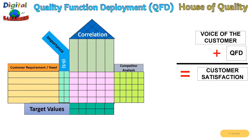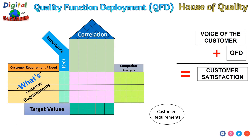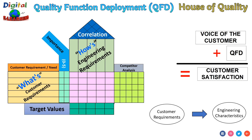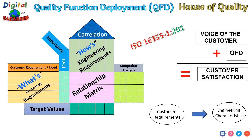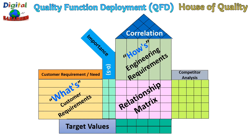The House of Quality name comes from a very useful diagram used to make this plan that resembles a house. It is the process of listening to customers and translating their needs — what they want — into engineering specifications (how), with the help of a relationship matrix between the 'what' and 'how'. House of Quality is part of the larger process called QFD, Quality Function Deployment, used in the Six Sigma DMAIC cycle in the define phase. The process is described in ISO 16355-1, 2015 version.